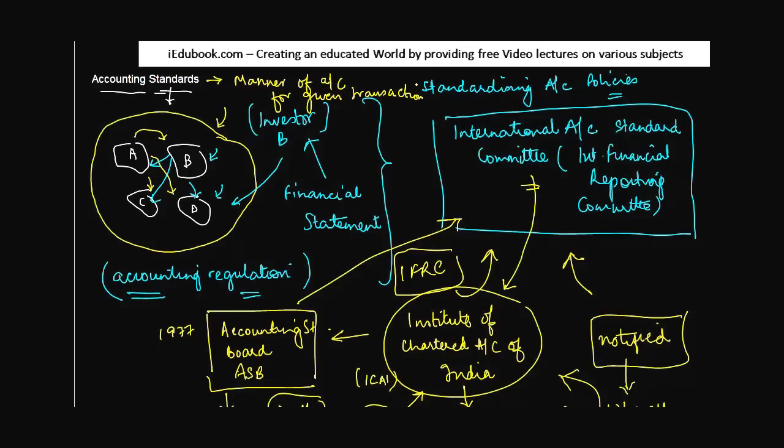This may be mandatory for certain people, may be optional for certain people. The implementation may be done in phases and so on, which we will see as we move on with the study of accounting standards. In India as of now you have 32 accounting standards. You can refer to any of your textbook to see what all are the text of these accounting standards.